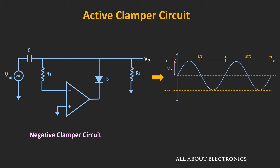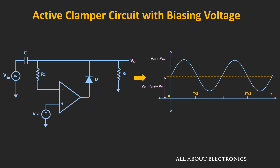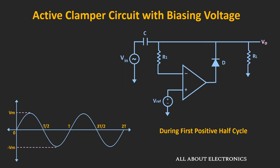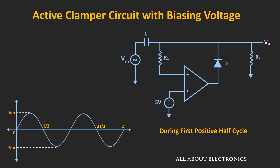Not only that — by adding a reference voltage or biasing voltage to this circuit, it is possible to additionally DC shift the entire waveform upwards by the reference voltage. This type of circuit is known as the active clamper circuit with biasing voltage. Let's quickly analyze this circuit. To easily analyze it, let's take some numbers. Let's say the biasing or reference voltage is equal to 5V, and the input voltage is a sinusoidal voltage varying from 12V to minus 12V. Let's see what happens during the first positive half cycle.